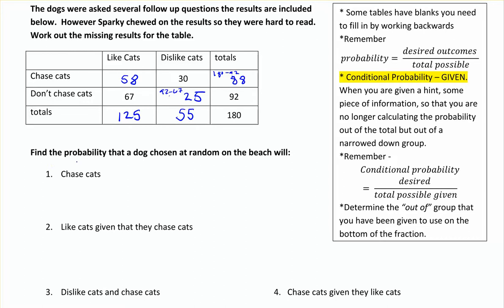So I want to find a few probabilities. The first one is just the probability that a randomly chosen dog off the beach will chase cats. How many dogs in total chase cats? 58 and 30 is 88 total. So I have 88 out of 180, and that works out to 0.4889.